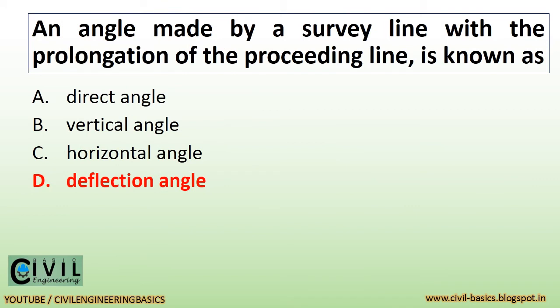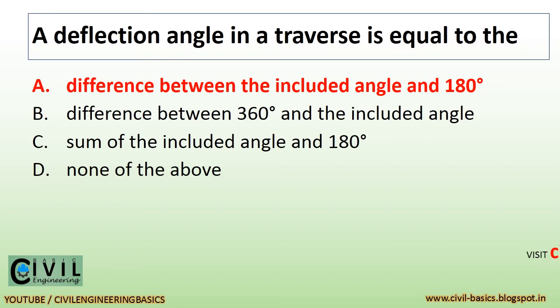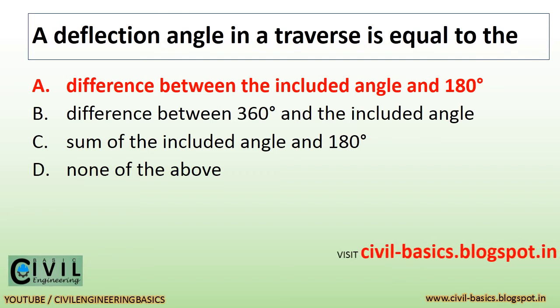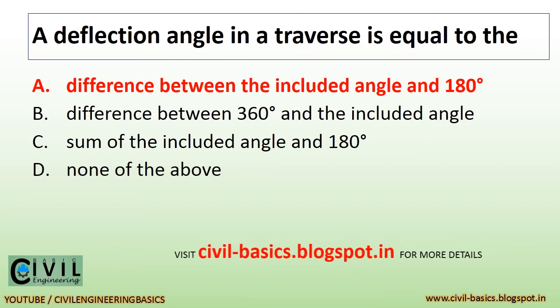An angle made by a survey line with the prolongation of the preceding line is known as a deflection angle. A deflection angle in a traverse is equal to the difference between the included angle and 180 degrees.